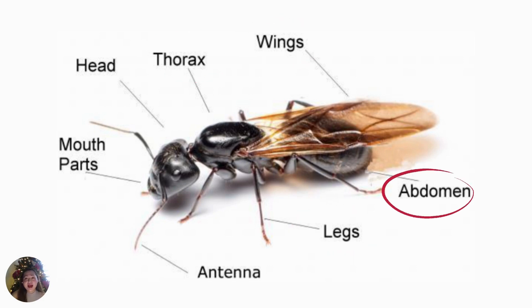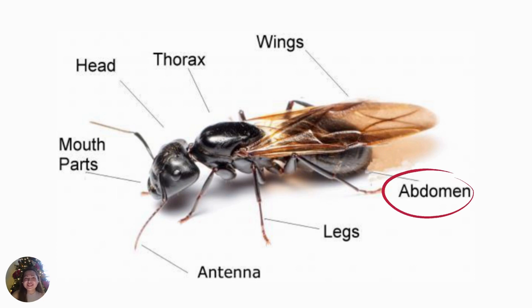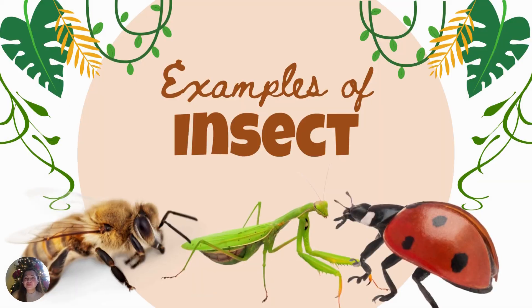The insect's abdomen contains organs like the stomach, intestine, and tubes for laying eggs. What's that body part that contains the stomach, intestine, and tubes for laying eggs? Correct! It is the abdomen.